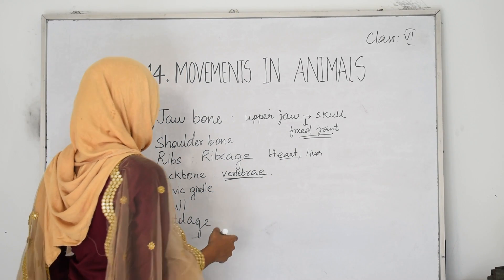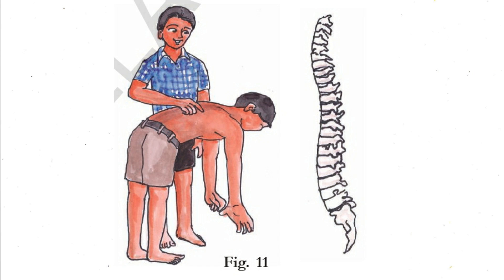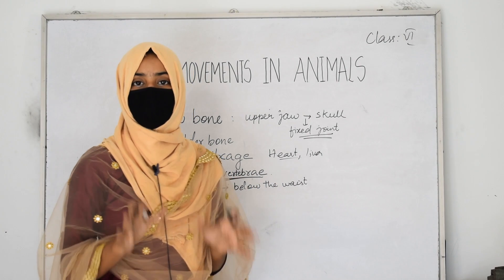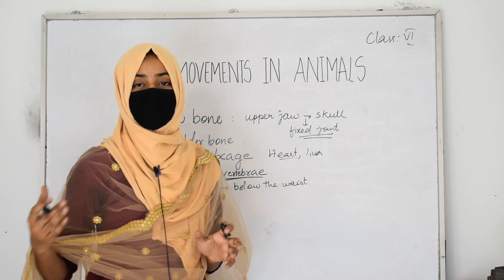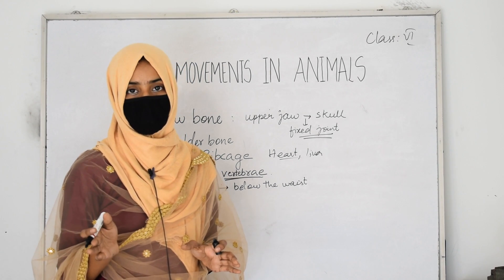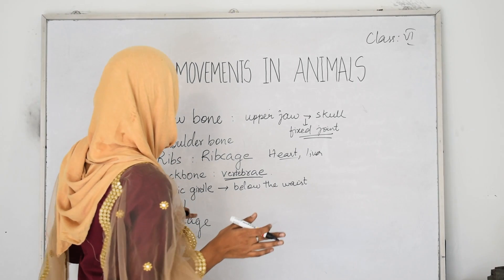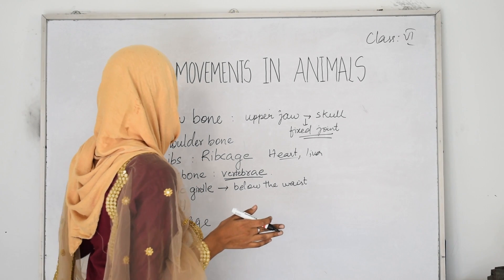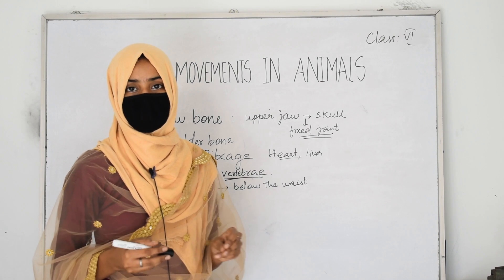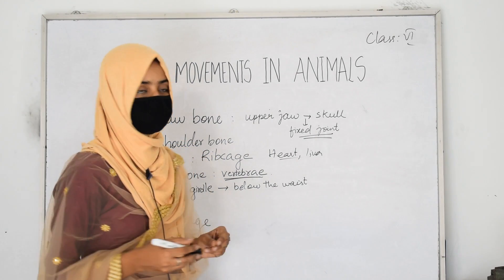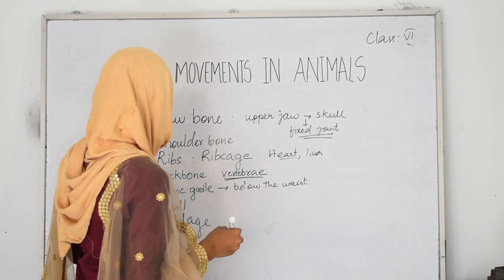The next bone is the pelvic girdle, present below the waist. Two similar bones are present on either side of the body — these are called the pelvic girdle and are made up of pelvic bones. The next important structure is the skull.